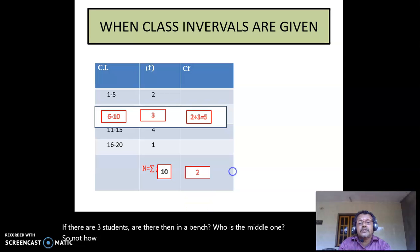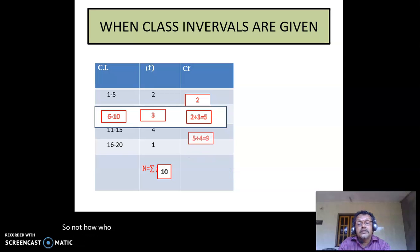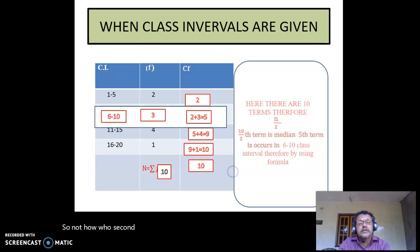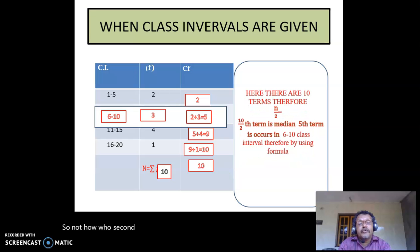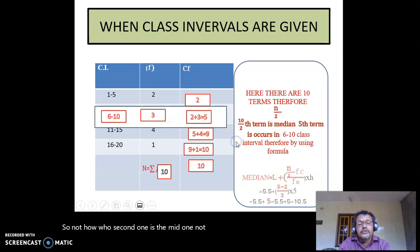Now when class intervals are given, find the cumulative frequency similarly: 2, then 2 plus 3 equals 5, 5 plus 4 equals 9, 9 plus 1 equals 10. We want the n by 2 score, which is the 5th score in this class interval. Using the formula: median equals L plus n by 2 minus FC by FM into H.